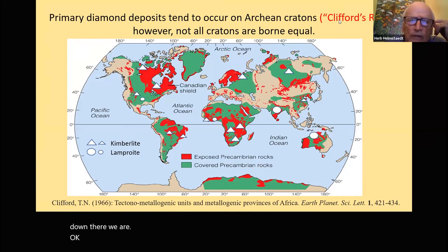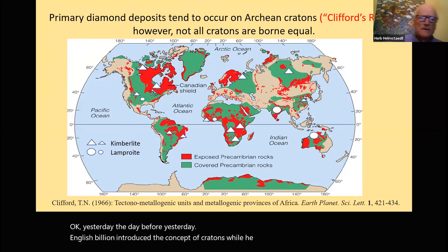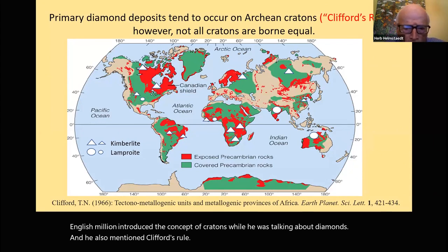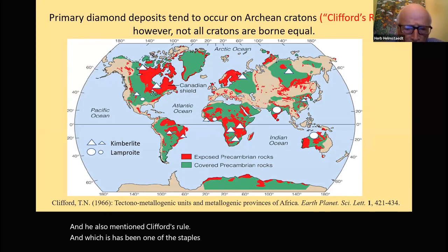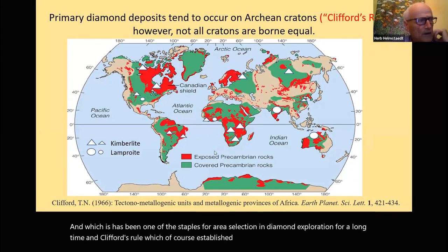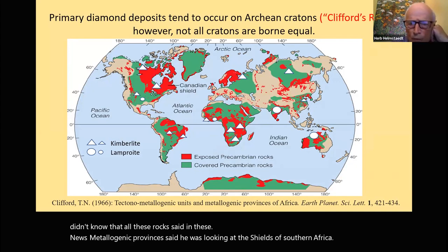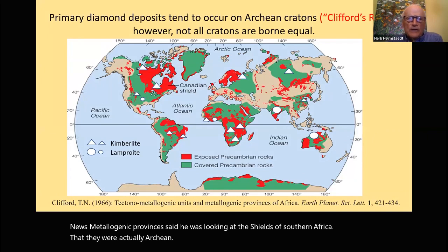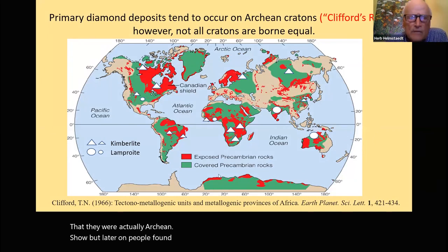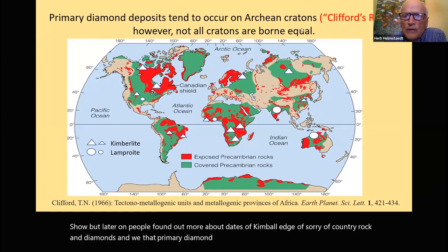The day before yesterday, Phanus Williun introduced the concept of cratons while talking about diamonds. He also mentioned Clifford's Rule, which has been a staple for area selection in diamond exploration for a long time. Clifford's Rule was established before we had kimberlite dates — we didn't know the rocks in these metallogenic provinces of southern Africa were Archean. Later, people found out more about dates of kimberlites, country rock, and diamonds. We now know that primary diamond deposits tend to occur at Archean cratons.